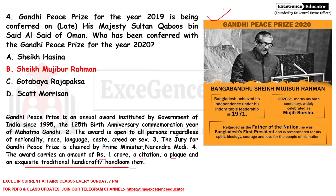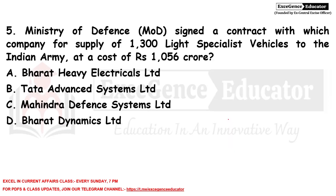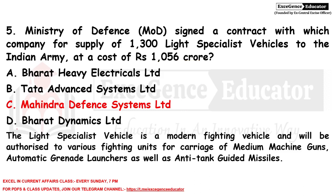Sheikh Mujibur Rahman, known as Bangabandhu, is the father of the nation of Bangladesh. He was Bangladesh's first president, and Bangladesh achieved its independence under his leadership in 1971. Minister of Defense signed a contract with Mahindra Defense Systems Limited for supply of 1,300 Light Specialist Vehicles to the Indian Army at a cost of 1,056 crore. The Light Specialist Vehicle is a modern fighting vehicle for carriage of medium machine guns, automatic grenade launchers, and anti-tank guided missiles.